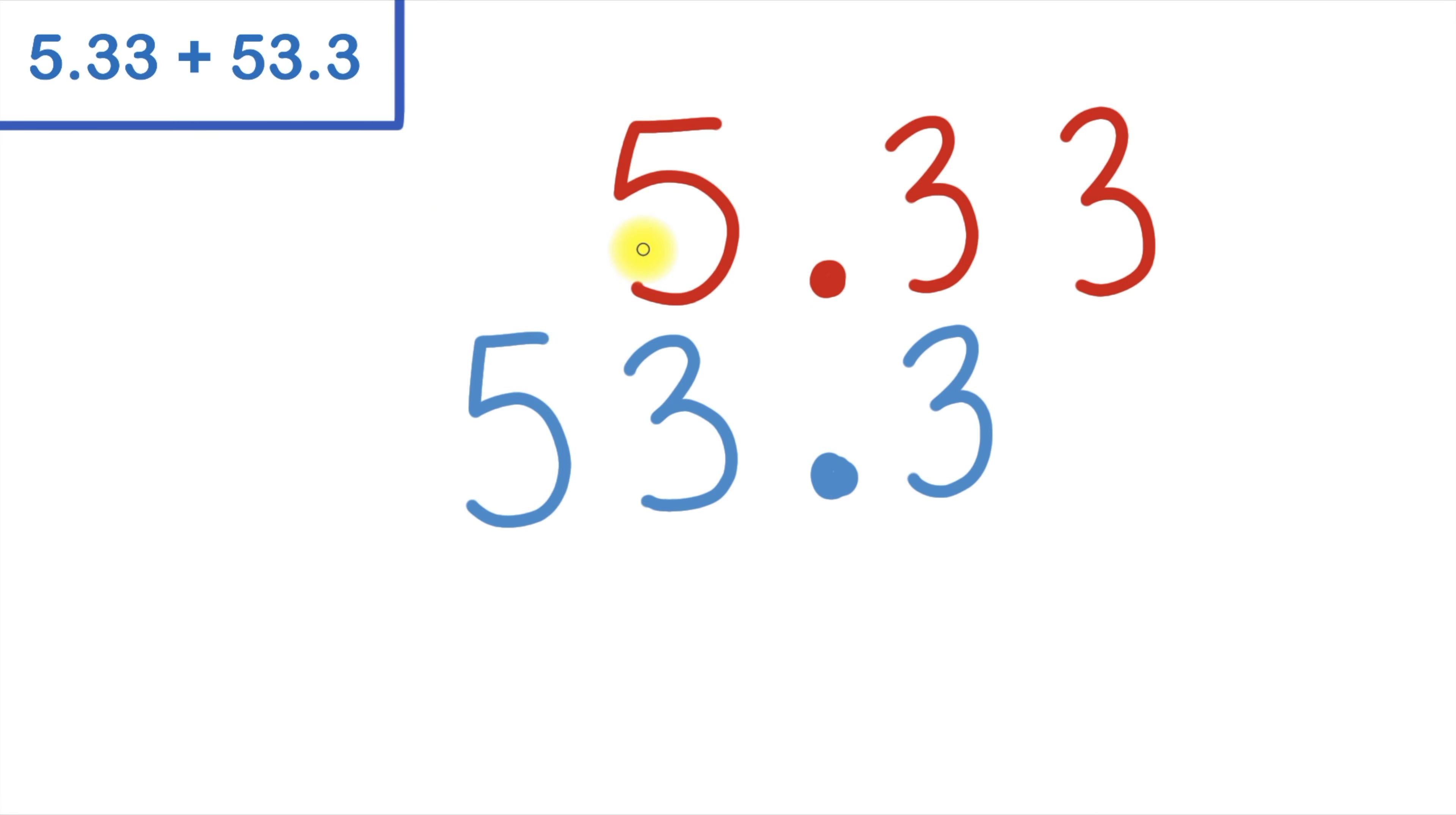If I have any blank spaces, I like to fill those blank spaces with zeros. That's called annexing zeros. Next I'll write my plus sign in, underline everything, and then get to work.